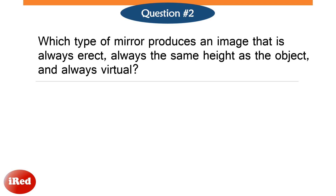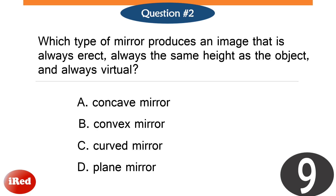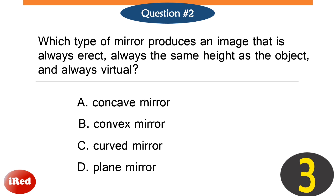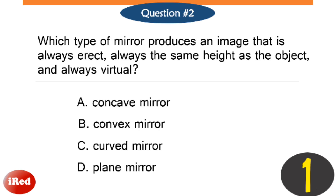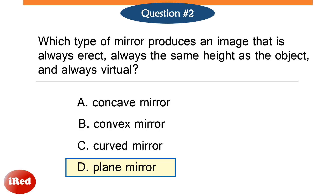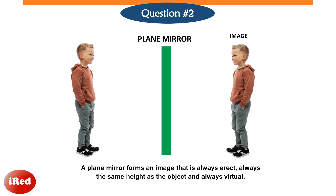Number two: which type of mirror produces an image that is always erect, always the same height as the object, and always virtual? The correct answer is letter D: plane mirror. A plane mirror forms an image that is always erect, always the same height as the object, and always virtual.